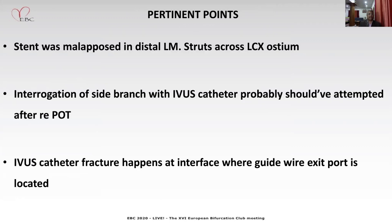The learning points from this case: the stent was malapposed in the distal left main with struts floating across the circumflex ostium. We should have attempted kissing balloon dilatation followed by proximal optimization before maneuvering the IVUS catheter into the side branch. Data shows that floating struts across the side branch predict future restenosis rates. If you try to maneuver an imaging catheter in the context of malapposed stent struts, the catheter can get caught and fractured — most often at the interface where guidewire support is located. Regarding interrogation of the side branch, physiological cutoffs predict future event rates with hard endpoints, but whether intervention based on imaging endpoints improves long-term outcomes awaits further data.